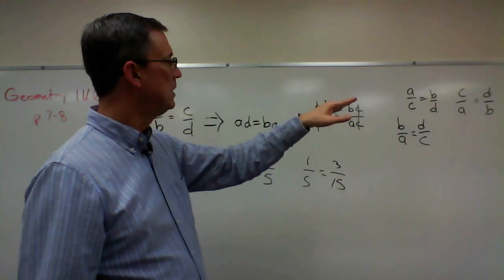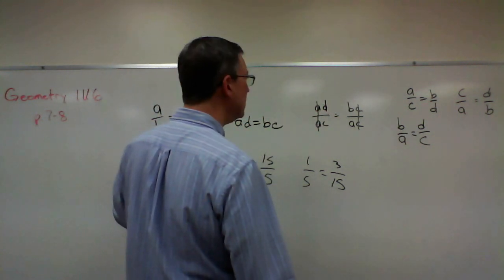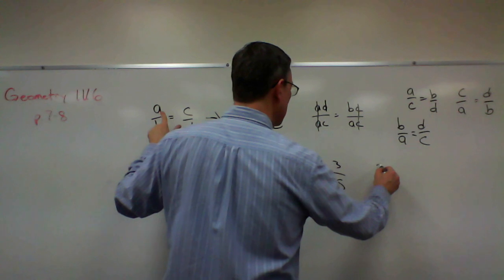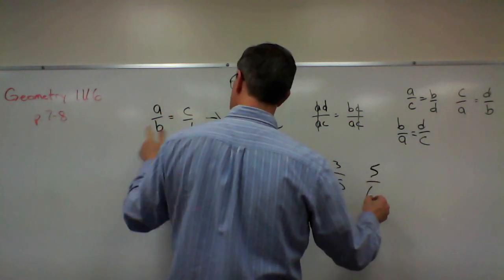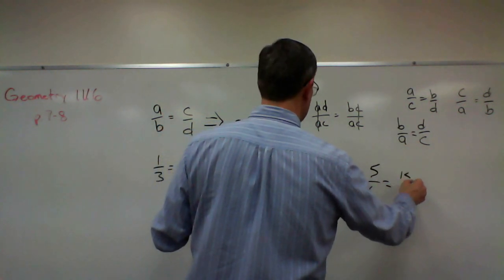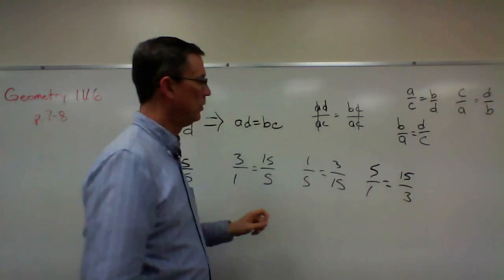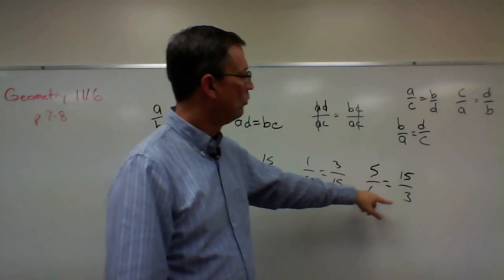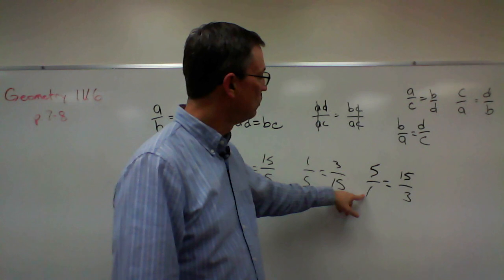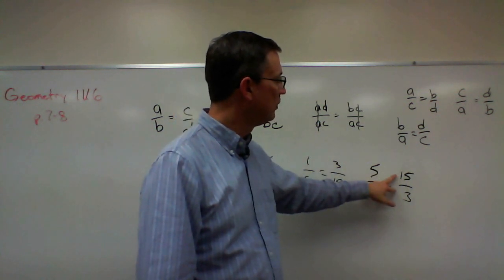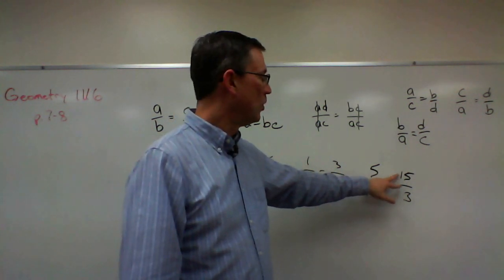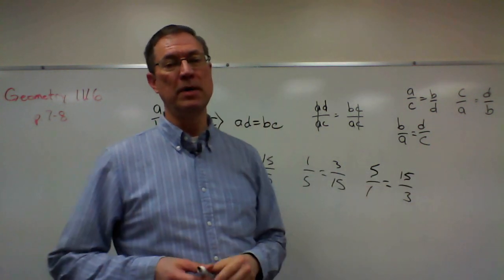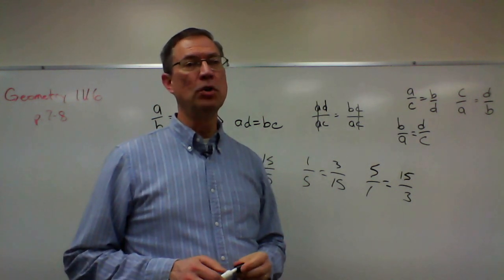And then the last one is C is to A. So that's like saying 5 is to 1 as 15 is to 3. So that's another restatement using the same numbers, just rearranging the order. Let's see if this still works. 5 is to 1 as 15 is to 3, if we reduce this, yes, I get 5. So both of these equal 5. And again, the cross products are equal.